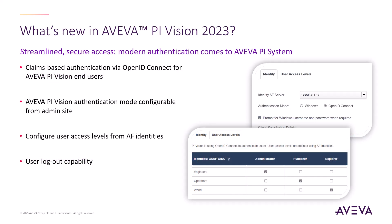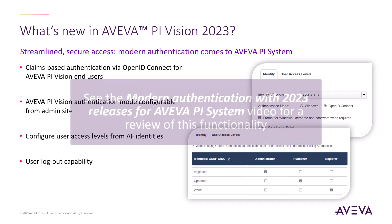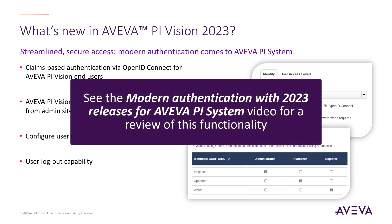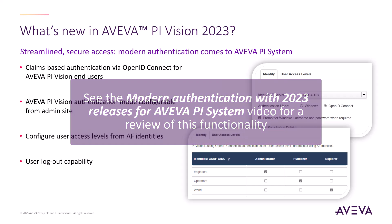With the previous 2023 Vision release, modern claims-based authentication through OpenID Connect was introduced. If you are unfamiliar with this functionality, see the link to the 2023 modern authentication video in the description.